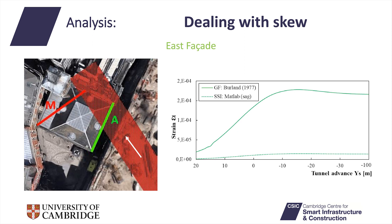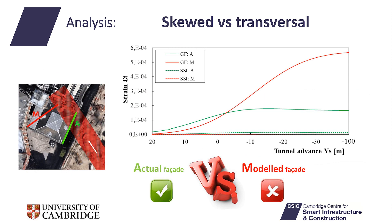These two curves represent the green field solution and the soil-structure interaction solution. Analyses are usually carried out considering not the actual facade but its projection in the transverse direction with respect to the tunnel advance. Analyzing the actual facade — shown in red — it is clear that the red line representation is completely wrong, due to a more than two-times increase in damage and a change in behavior from sagging to hogging.